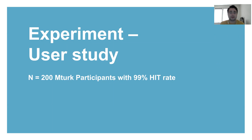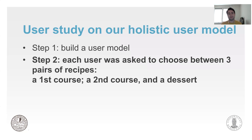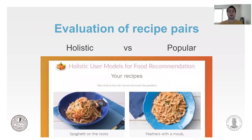To evaluate our holistic food recommendations, we recruited 200 Mechanical Turk participants, and for each of them we built a user model. This user model inquired about some of their characteristics, their food goals, their health goals, etc. Afterwards, each user was asked to choose between three different pairs of recipes — a first course, a second course, and a dessert. This would look like this: on one hand, a holistic recommendation; on the other hand, a popular recommendation. We would present the images of the recipes, their titles, and their directions.